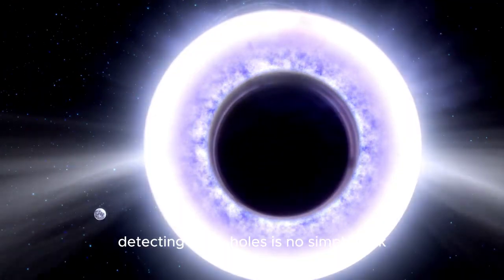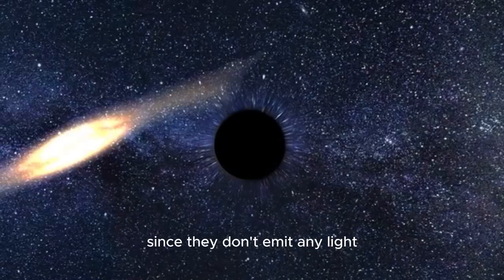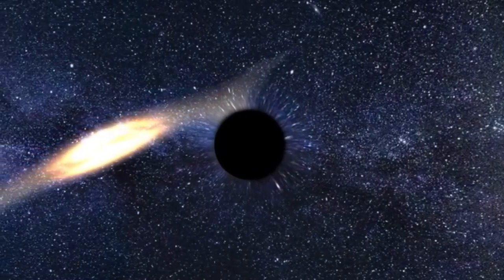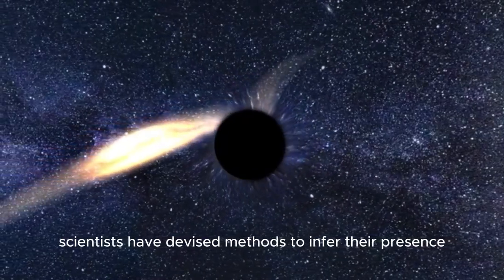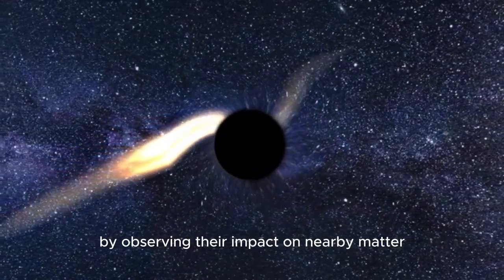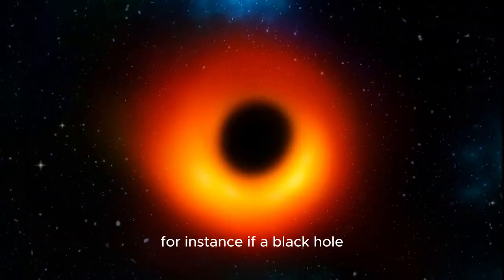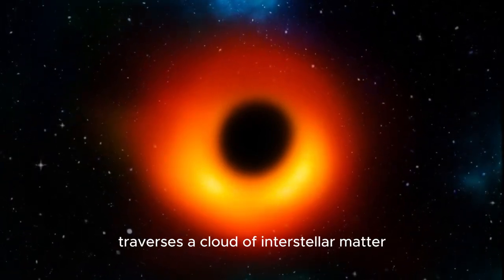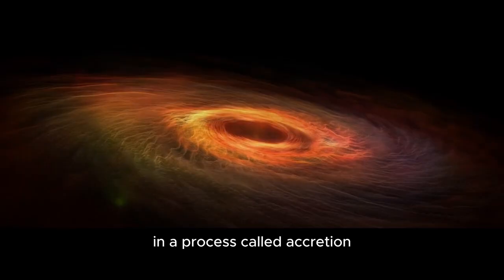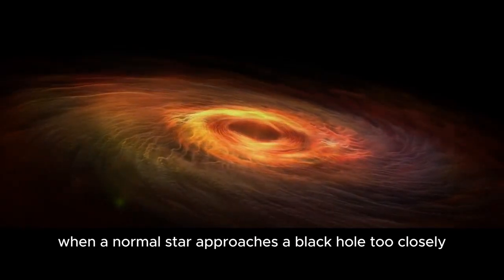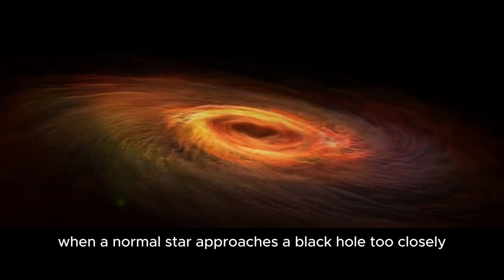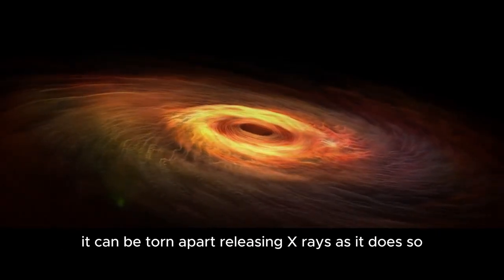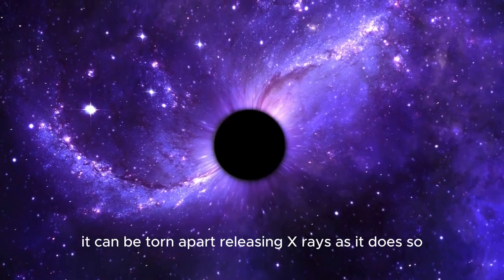Detecting black holes is no simple task since they don't emit any light. However, scientists have devised methods to infer their presence by observing their impact on nearby matter. For instance, if a black hole traverses a cloud of interstellar matter, it will draw that matter toward it in a process called accretion. Additionally, when a normal star approaches a black hole too closely, it can be torn apart, releasing x-rays as it does so.